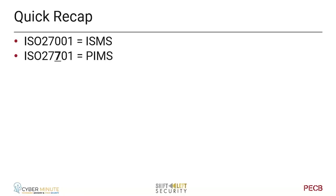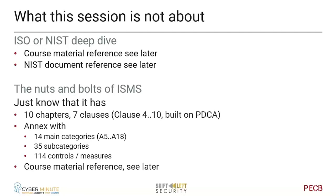Just to avoid any confusion: ISO 27001 is referred to as ISMS — Information Security Management System — and ISO 27701 is PIMS — Privacy Information Management System. I try to avoid the number confusion by using these abbreviations. We only have an hour, so we can't cover the full details — we're looking at high-level information. I hope it will kickstart your understanding of what ISMS, PIMS, and NIST are doing.